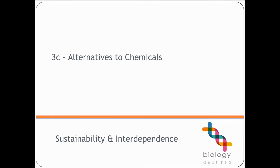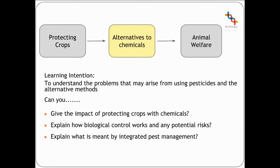Hello and welcome to this lesson for higher biology. We are on Unit 3, Key Area 3, Crop Protection, and in this lesson we're going to be looking at the issues we have with using chemicals and the possible alternatives we can use instead. You will be expected to understand the problems that may arise from using pesticides and what the alternative methods are. You need to be able to give the impact of protecting crops with chemicals, explain how biological control works and any potential risks, and explain what is meant by integrated pest management.